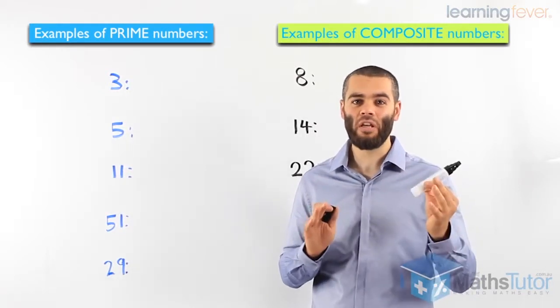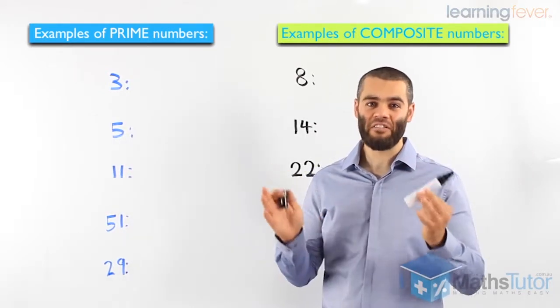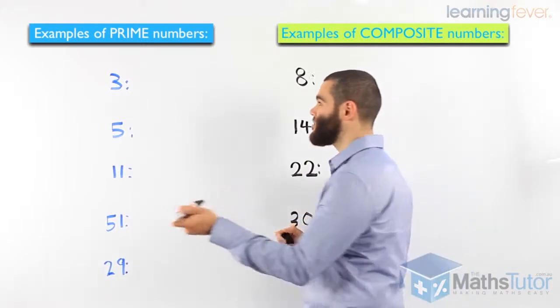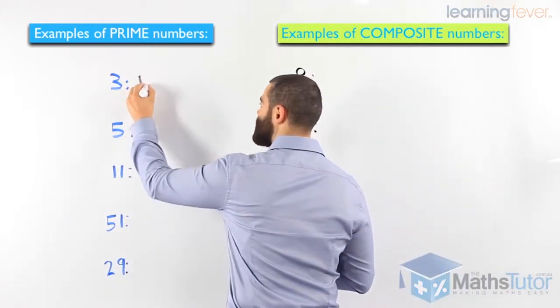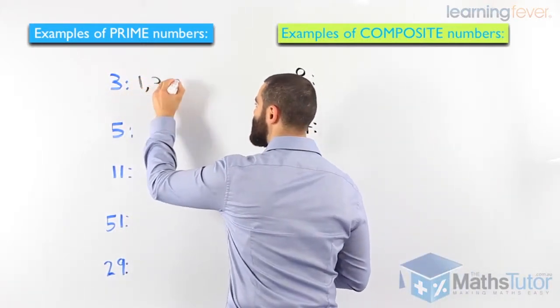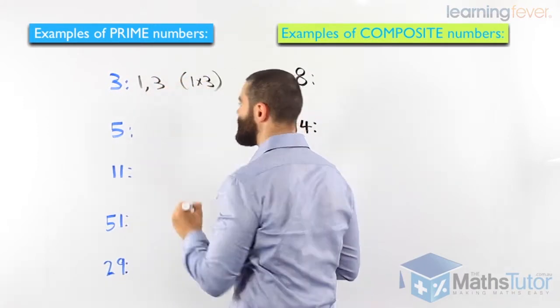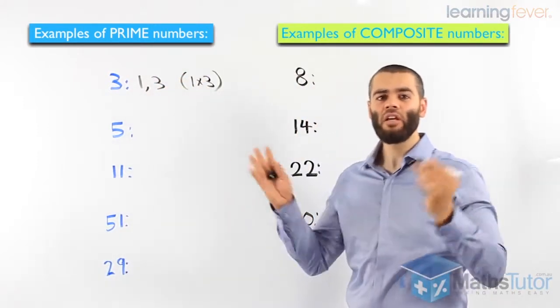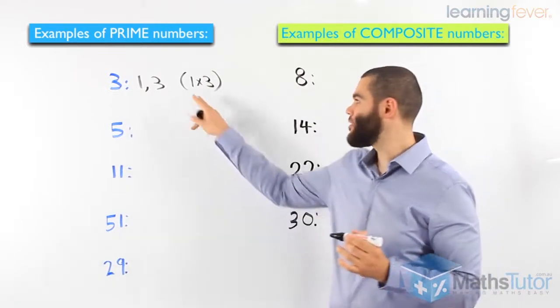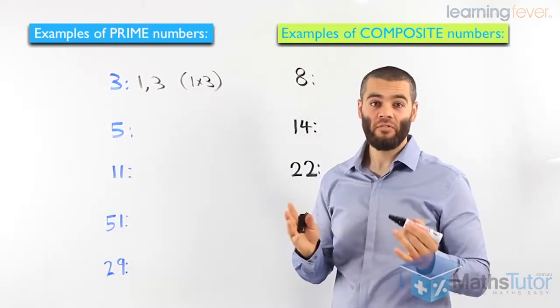So the only factors available are 1 and 3. No other factors for 3. This is why it's called a prime number. It's a prime number because it has only 2 factors.